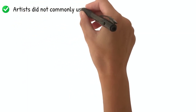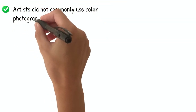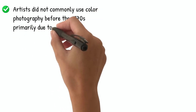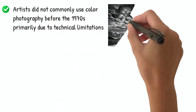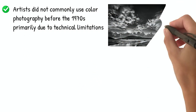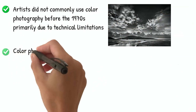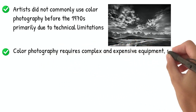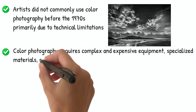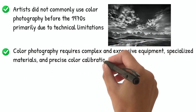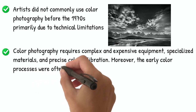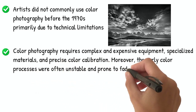Artists did not commonly use color photography before the 1970s primarily due to technical limitations. Color photography requires complex and expensive equipment, specialized materials, and precise color calibration. Moreover, the early color processes were often unstable and prone to fading or color shifts over time.